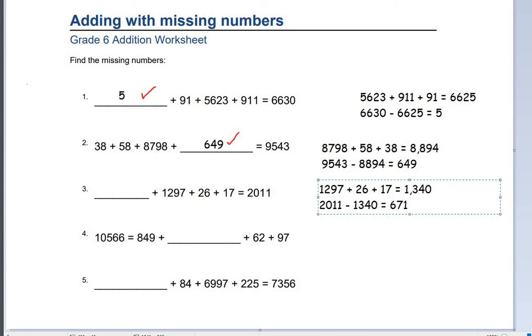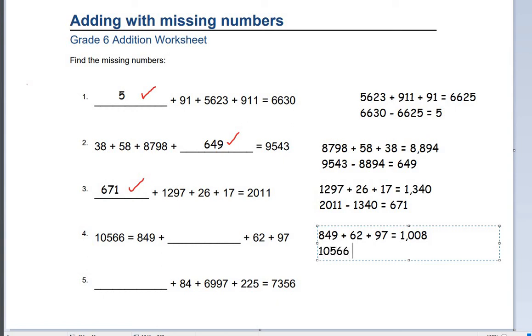Number 4. 10,566 equals 849 plus blank plus 62 plus 97. So, we do 849 plus 62 plus 97, giving us a total of 1,008, and then minus that from our total of 10,566, giving us a total of 9,558. Very good.